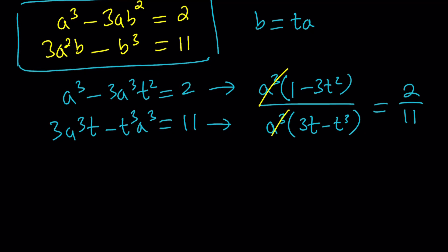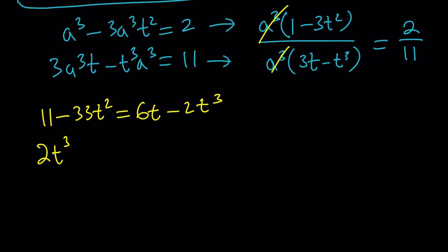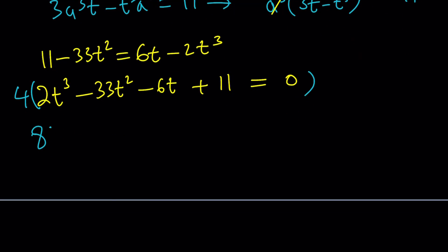Now we can go ahead and cross multiply. That gives us 11 minus 33T squared equals 6T minus 2T cubed. And then let's put everything on the same side and make it a full cubic. If you put everything on the left, you'll get 2T cubed minus 33T squared minus 6T plus 11 equals 0.